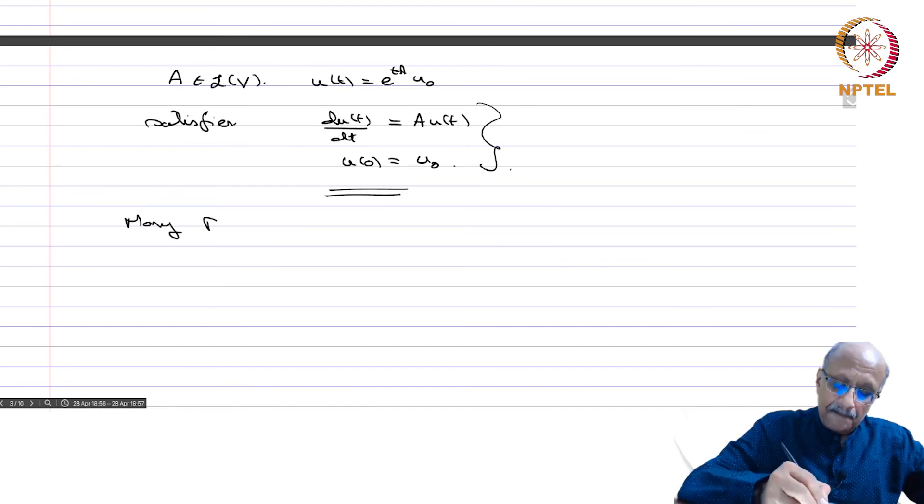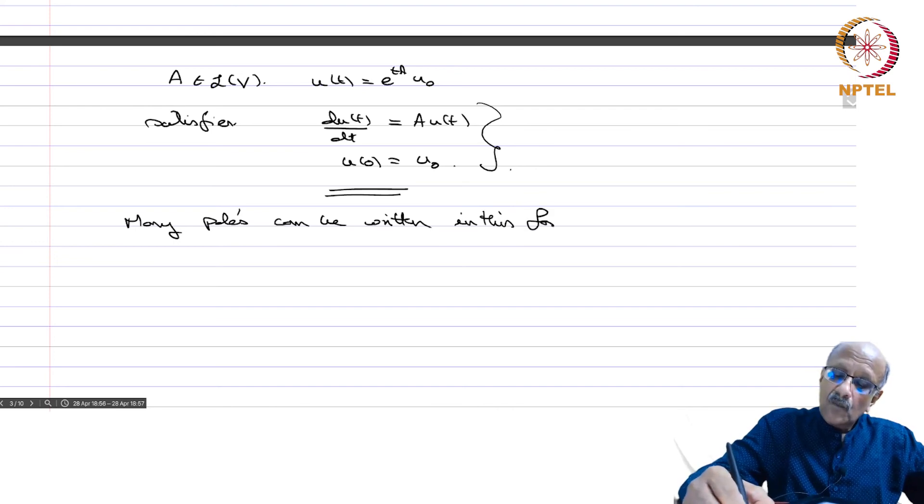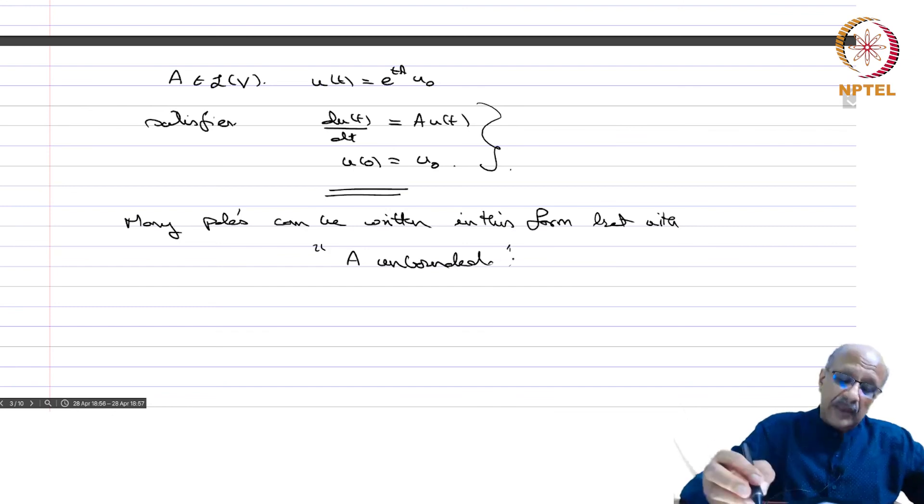Now, many PDEs can be written in this form, du/dt equals Au and u(0) equals u_naught, but then A will be unbounded. So we want to investigate how to handle this situation, and that is where we introduce the generalization of this.